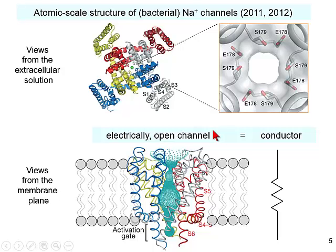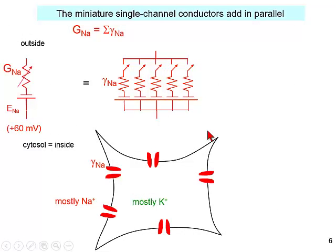Each open channel is a conductor. And furthermore, because it's gated and can be either open or closed but not intermediate, each of these little open channels has a switch associated with it. When the switch is straight up, the channel is open; when the switch is slanted, the channel is closed. The reason that we use conductors rather than resistors is that conductors add in parallel, whereas resistors don't.